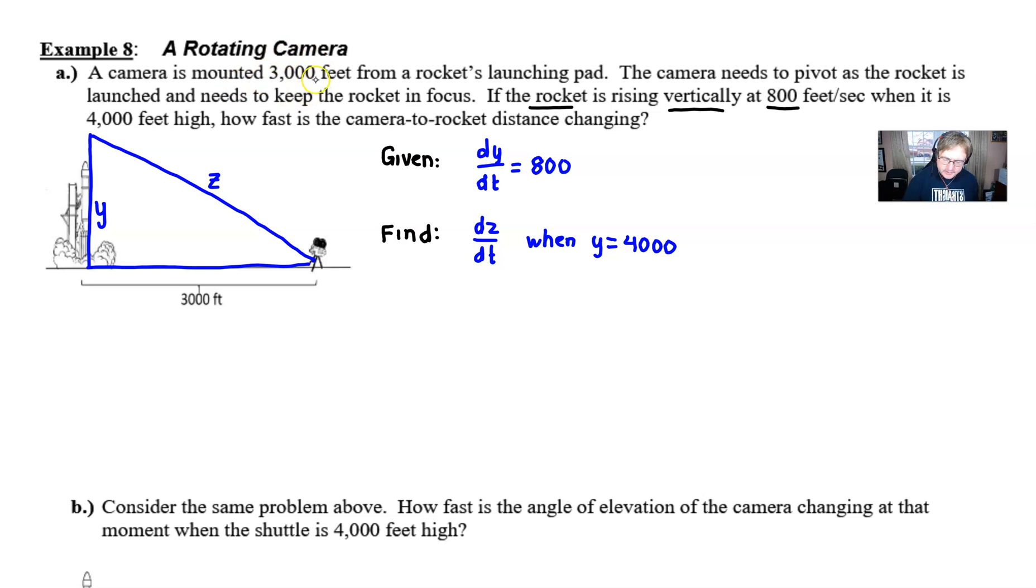We've essentially used all of the numbers in the problem. This 3,000 has already been labeled. So we need an equation. I've alluded to the fact that this problem is really using the sides of a right triangle. So we're certainly looking at the Pythagorean theorem here. Y squared plus 3,000 squared would be equivalent to Z squared.